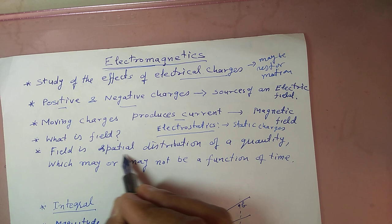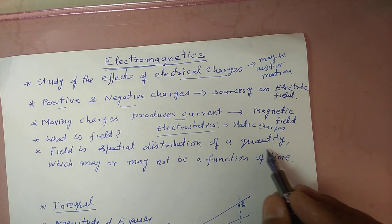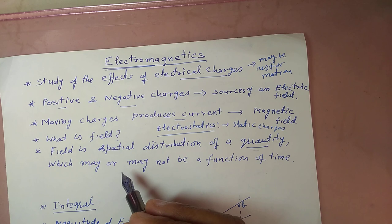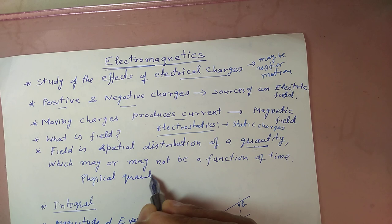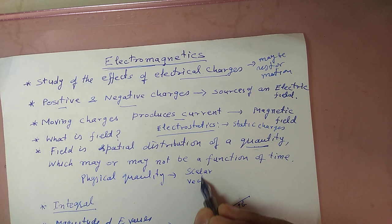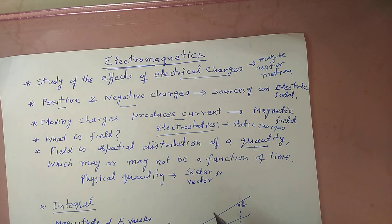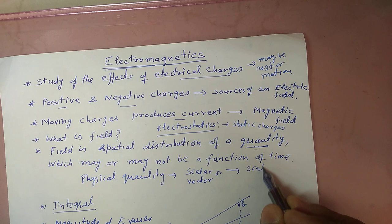So what is the definition of a field? A field is basically the spatial distribution of a quantity, and that quantity may be a scalar quantity or a vector quantity, and it may or may not be a function of time. A field in which this quantity is scalar, we will call a scalar field.